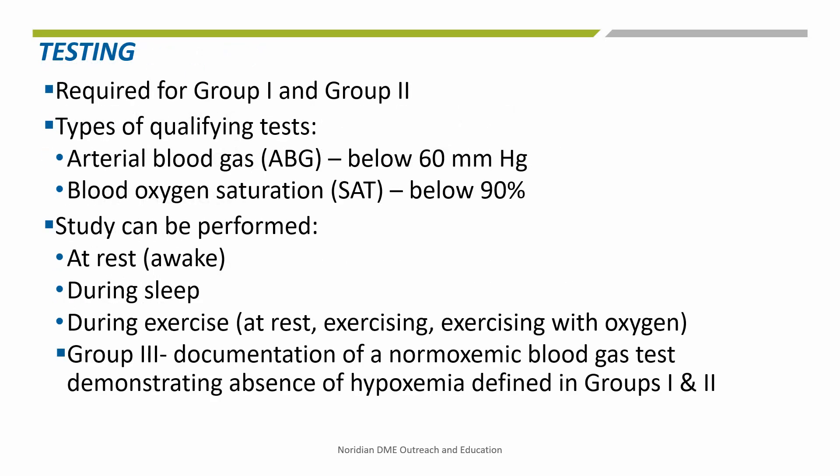There are two basic types of tests that can be done: arterial blood gas or ABG testing, which is the direct testing of oxygen content from an arterial blood sample, or oximetry, also known as spot or pulse oximetry, which involves the determination of percent oxygen saturation via a transcutaneous sensor. When both ABG and SAT testing are done on the same day under the same conditions, the ABG result will be used to determine coverage.